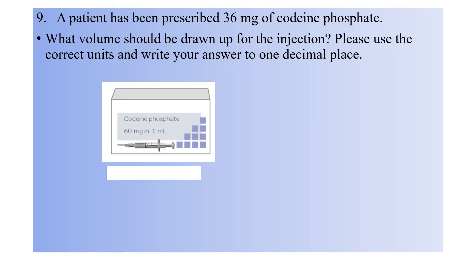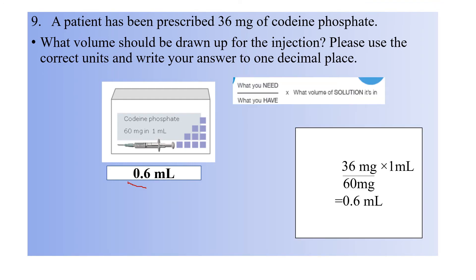Question nine: a patient has been prescribed 36 mg of codeine phosphate. What volume should be drawn up for the injection? Please use the correct unit and write your answer to one decimal place. The answer is 0.6 mL. Using the formula: what you need divided by what you have, multiplied by the volume — your need is 36 mg, and you have 60 mg in 1 mL of codeine phosphate ampoule. Calculating this gives 0.6 mL.